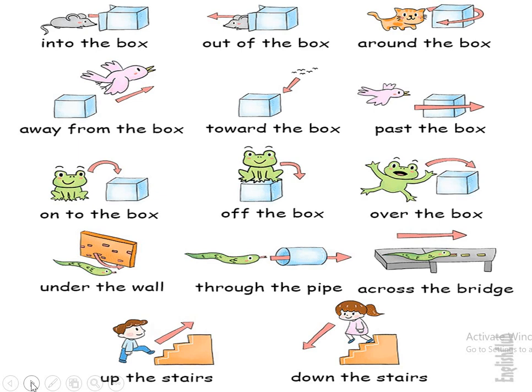There are several other examples: into the box, out of the box, around the box, away from the box, towards the box, past the box, onto the box, off the box, over the box — 'over the box' means jumping from one side to the other without sitting on it — under the wall, through the pipe, across the bridge, up the stairs and down the stairs. All these are different kinds of prepositions that help us understand position.